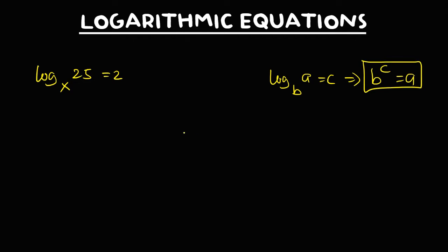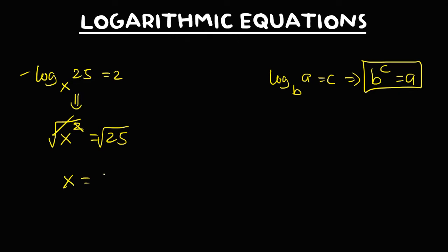So therefore, for this logarithm in exponential form, that's x to the power 2 equals 25. Then to solve for x, take the square root. So x is equal to positive and negative 5.